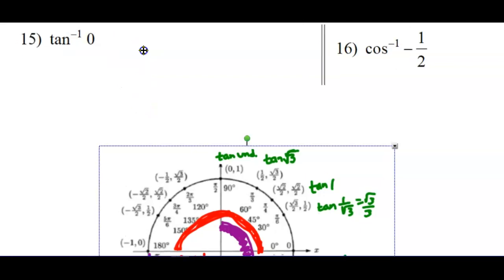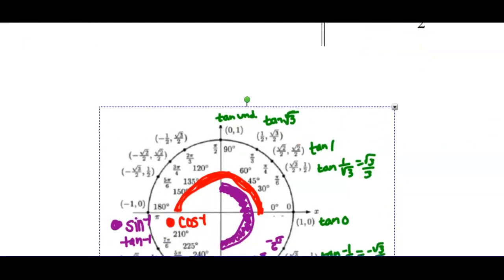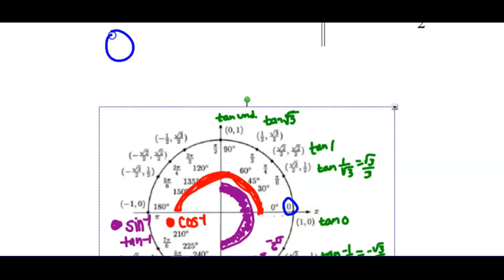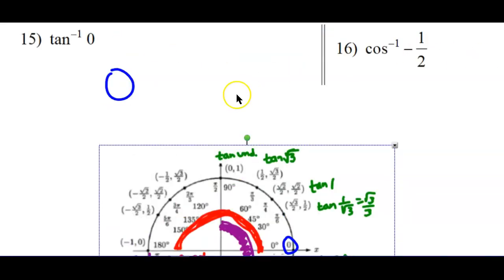Number 15: where is the tangent of 0? Tangent is y over x. So tangent is 0 over 1, which equals 0, and that happens at 0 radians. So we're looking for an angle, and the angle is 0 radians.